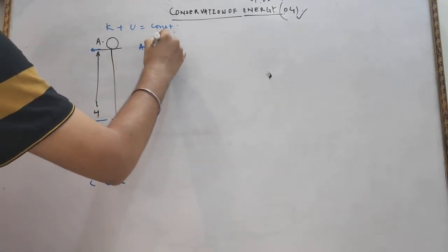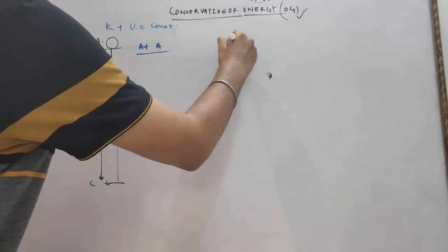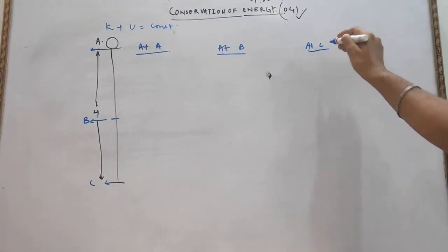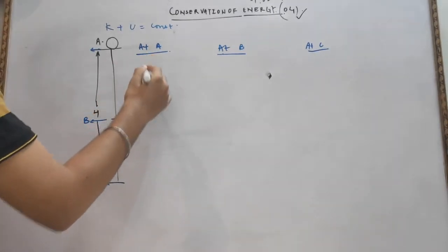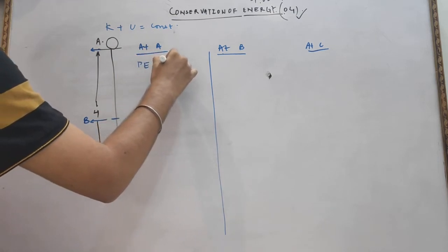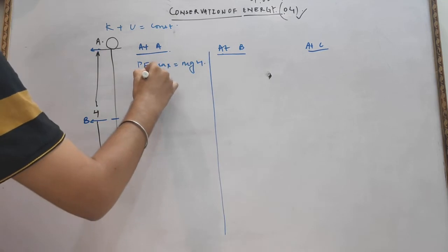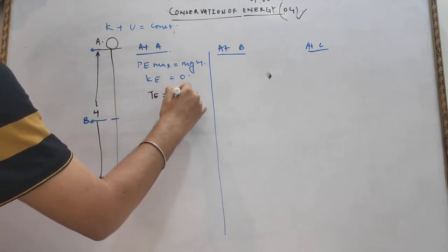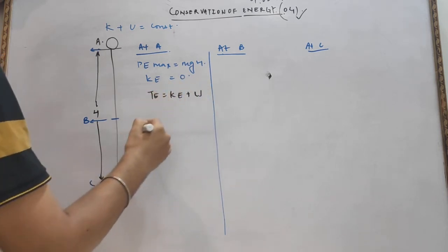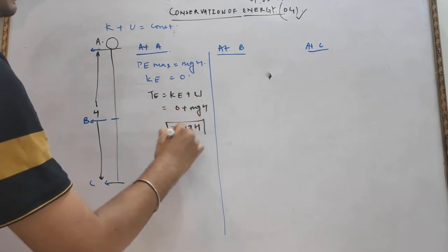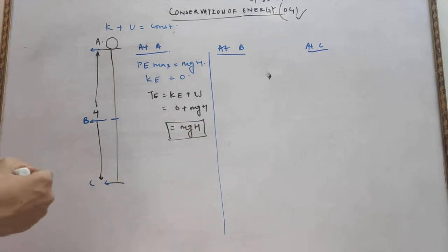At point A, potential energy is maximum and is equal to mgh, while kinetic energy is equal to zero because the ball is at rest. So total energy at point A equals kinetic energy plus potential energy, which is 0 + mgh, equal to mgh.